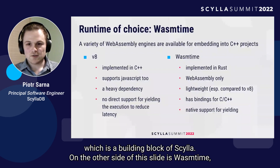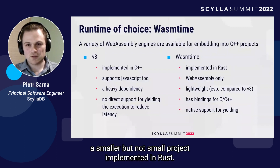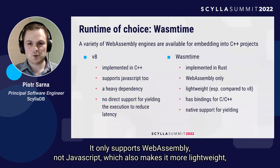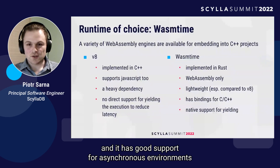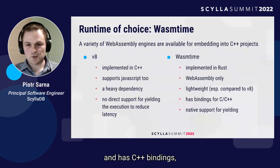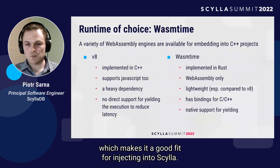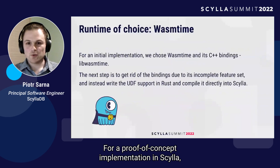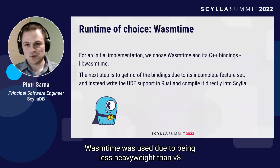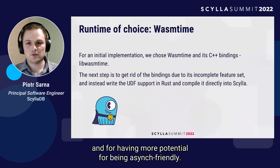On the other side is WASMtime, a smaller project implemented in Rust. It only supports WebAssembly — no JavaScript — which also makes it more lightweight. It has good support for asynchronous environments and has C++ bindings, making it a good fit for integrating into Scylla. For the proof-of-concept implementation, WASMtime was used due to being less heavyweight than V8 and having more potential for being async-friendly.